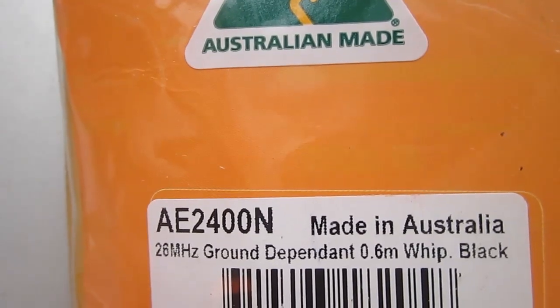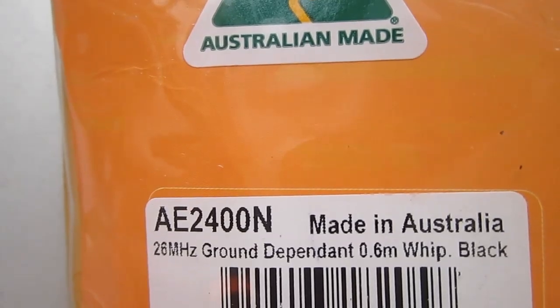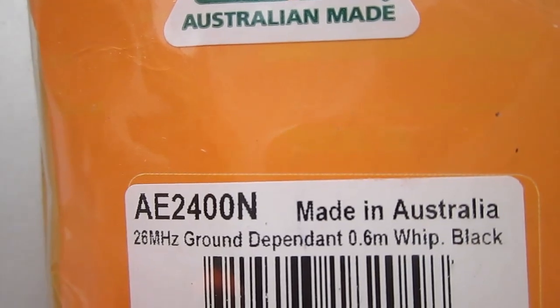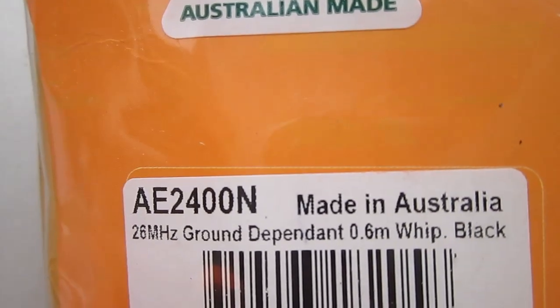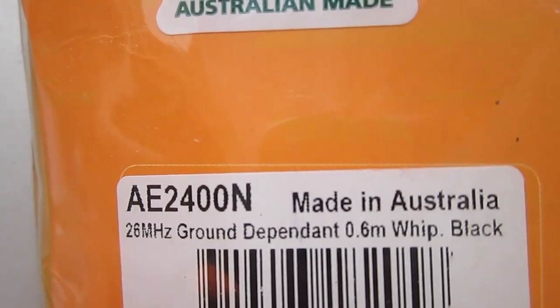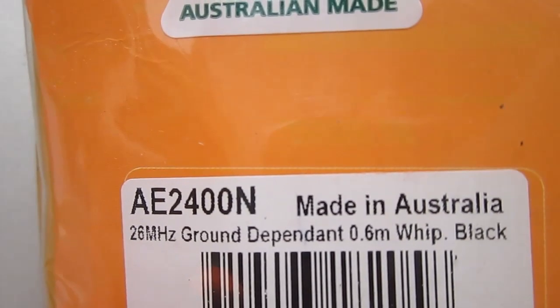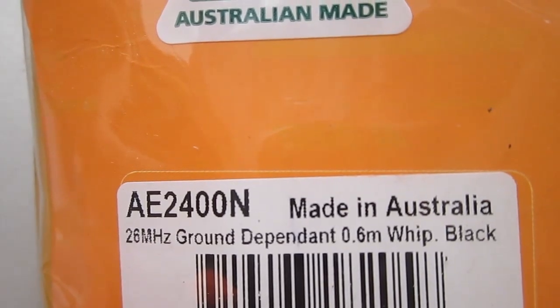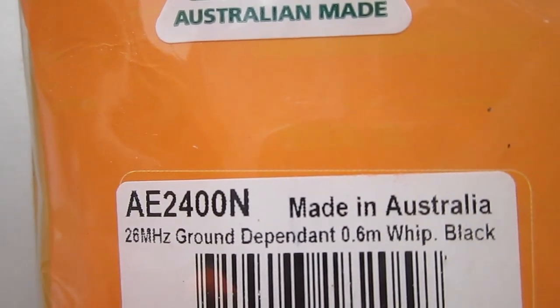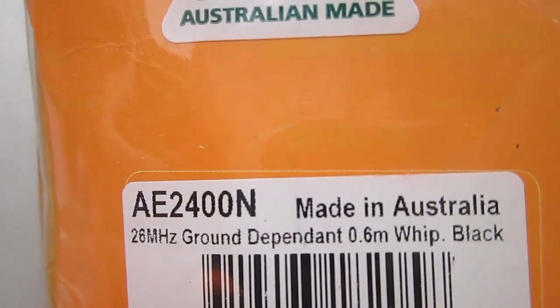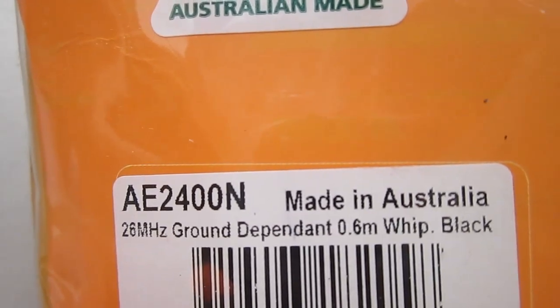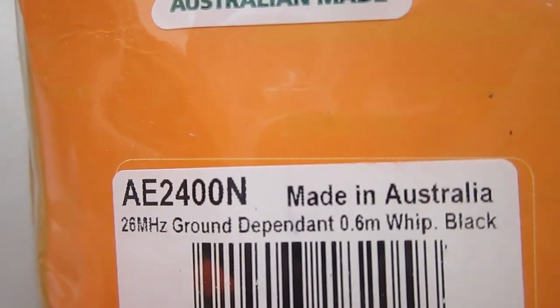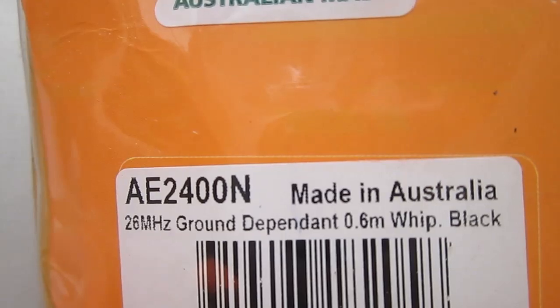This is the other antenna we're going to have a look at. It's made by GME, Australian made. It's a 26 megahertz ground dependent antenna, 0.6 of a meter high. It's a whip, obviously a quarter wave, and it's black. The part number is AE2400N. Now this antenna will require a ground plane because it quite clearly says it's ground dependent on the packet.